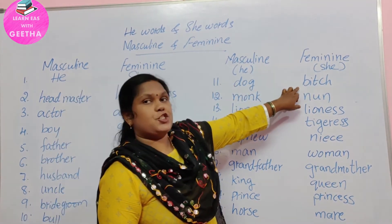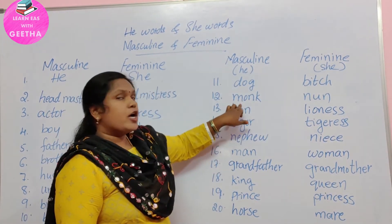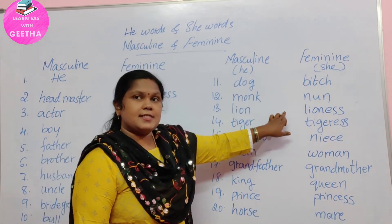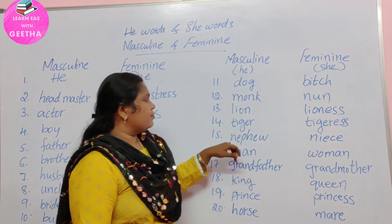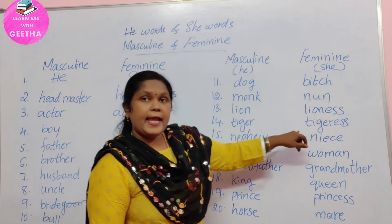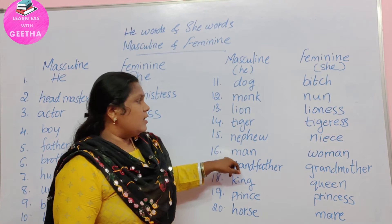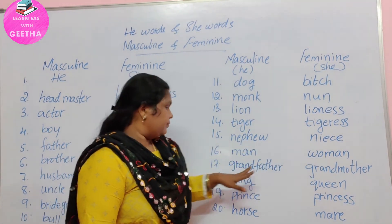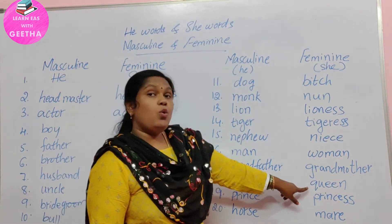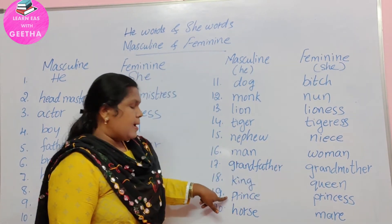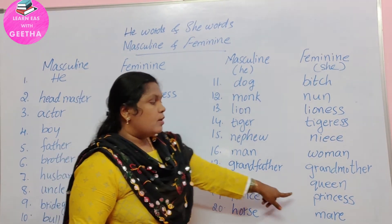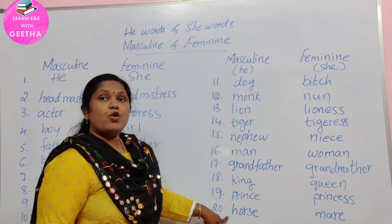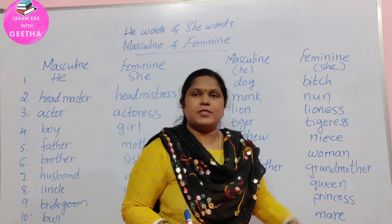Dog, bitch. Monk, nun. Lion, lioness. Tiger, tigress. Nephew, niece. Man, woman. Grandfather, grandmother. King — 'raju.' Queen — 'rani.' Prince — 'yuvaraju.' Princess — 'yuvararani.' Horse, mare. That's all.